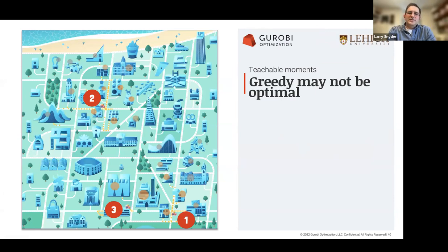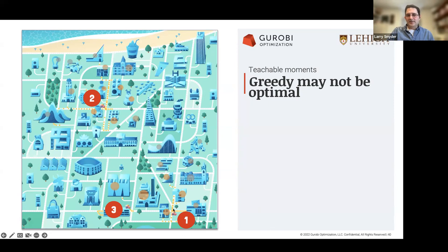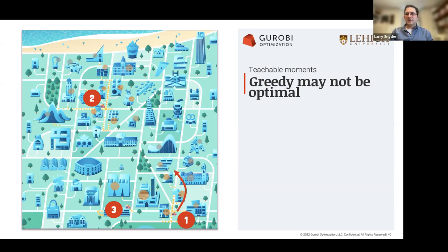Another teachable moment: solving the problem using a greedy approach may not be optimal. Most players tend to find the best location for their first truck, leave it there, find the best location for the second, and so on. That approach works quite well, but it's not optimal — facility location problems can't be solved optimally in a greedy way. You can demonstrate this through the game: in a particular data set, you might locate truck one in the southeast, truck two in the northwest, and truck three in the south, but after placing truck three it turns out it's better to move truck one north a little — a solution you wouldn't reach with a strictly greedy approach.